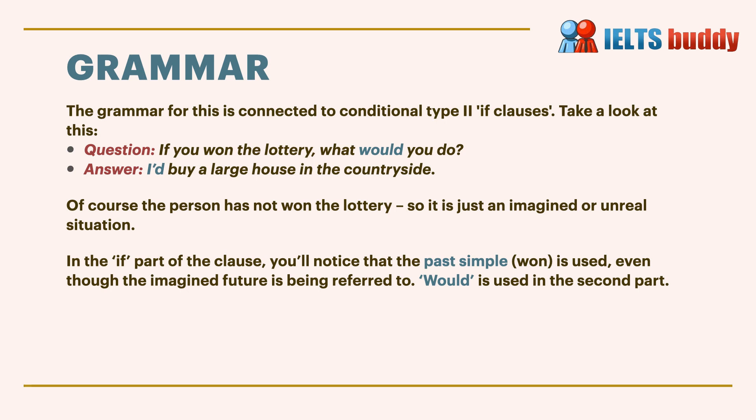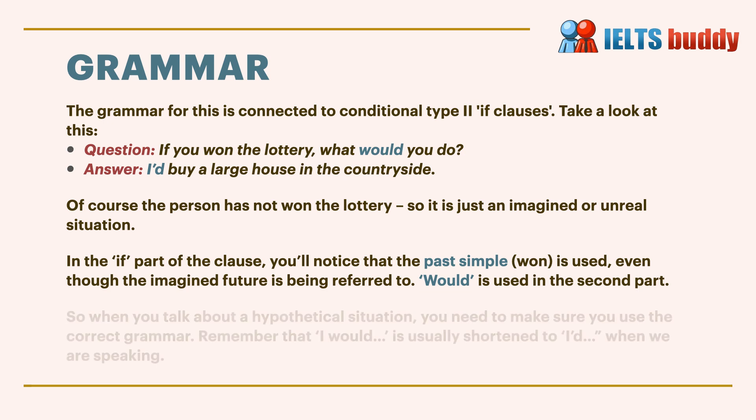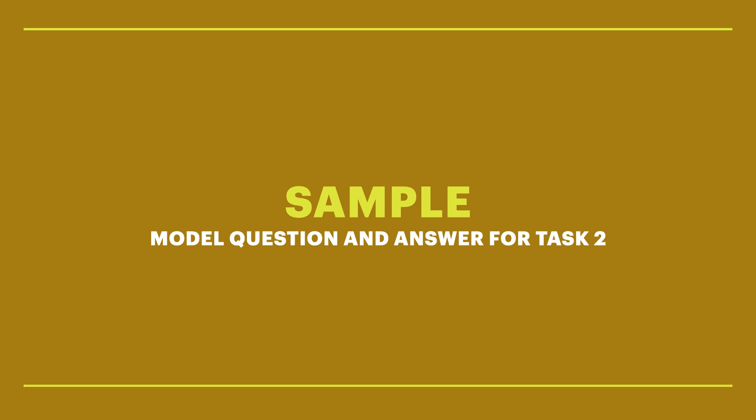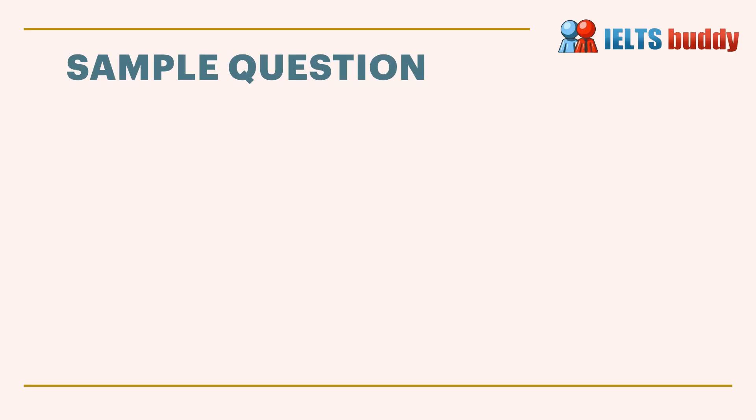'Would' is used in the second part. Remember the sentence can be put the other way around: 'What would you do if you won the lottery?' So let's look at a sample model question and answer for IELTS speaking task two, so you can see a typical one using this structure.